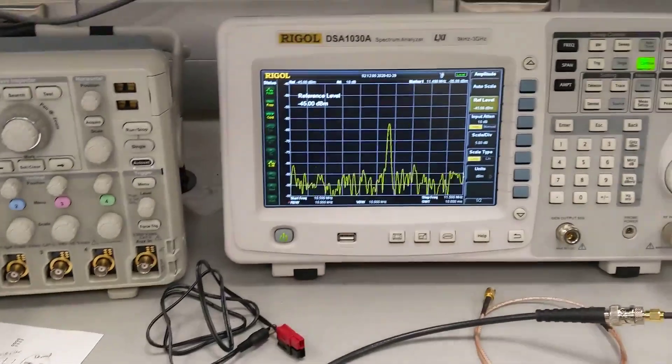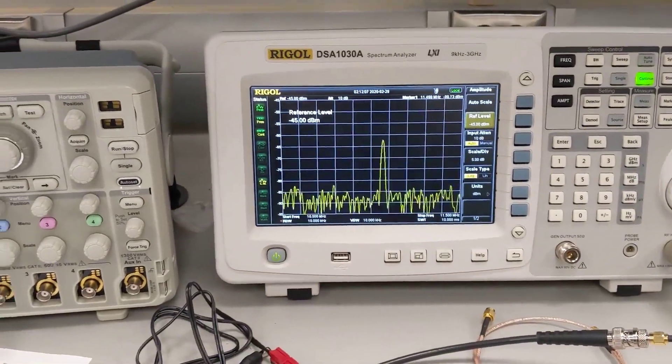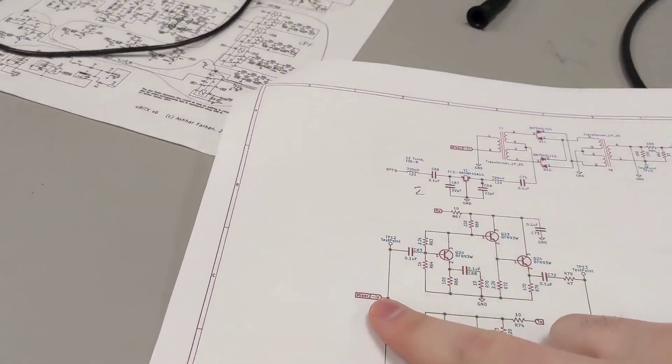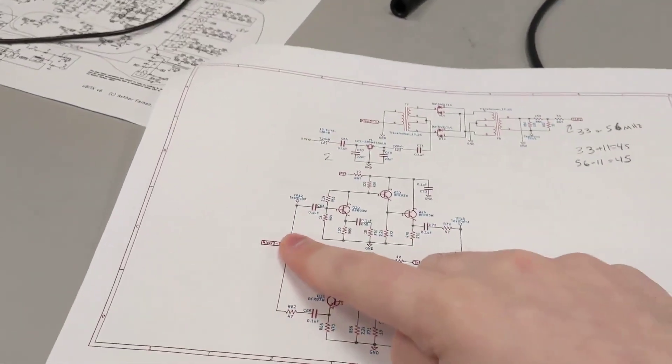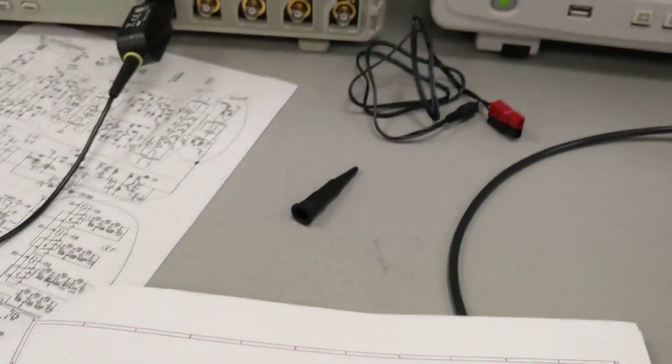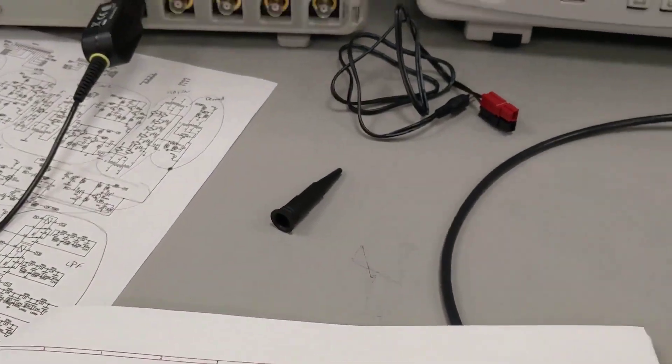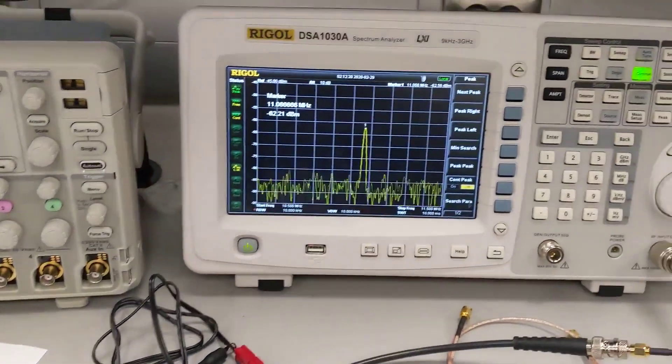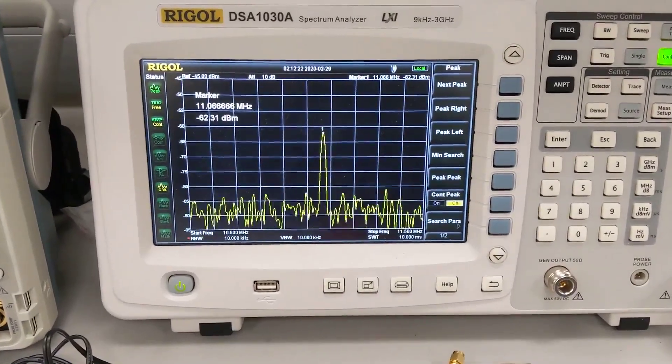So I'm going to move over and take a look at the output of this. Alright, so I've adjusted our setup here. So now what we're looking at is we're looking at the test point 12, or the output of this mixer. It should be around 11 MHz. Yeah, about 11.059 is where it should be. We've got 11.06.